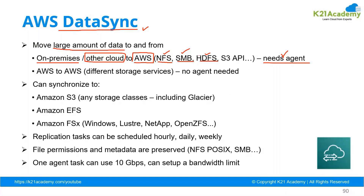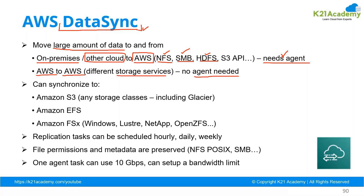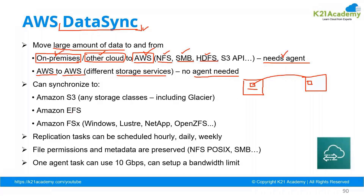When we are using DataSync, if you want to migrate the data from one AWS server to another AWS server into a different storage service, then no agent is needed. So this DataSync service basically works on agents. If the data is required to be transferred from on-premise or from other cloud service providers to AWS, then you will be putting an agent on the storage of the on-prem server, and this agent will establish connectivity to the AWS cloud and then securely, in an encrypted and compressed manner, your data will be migrated.